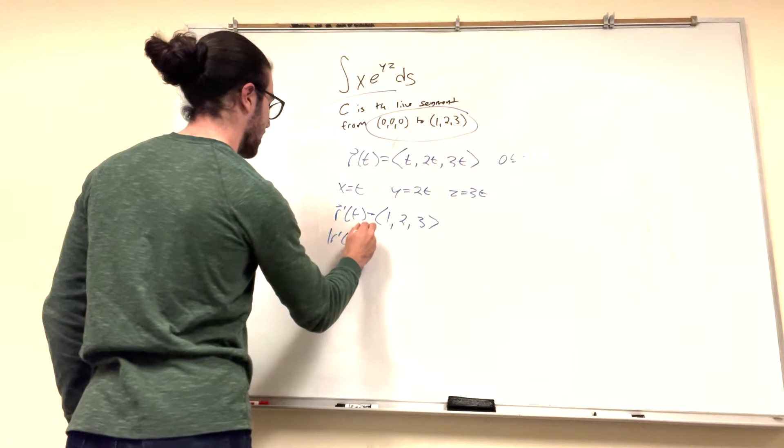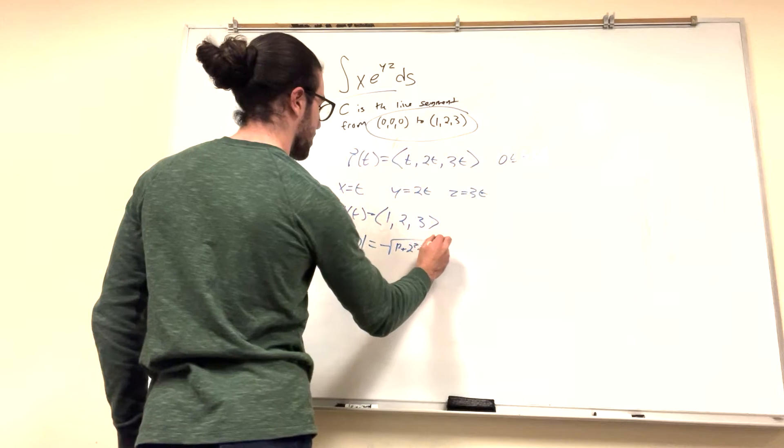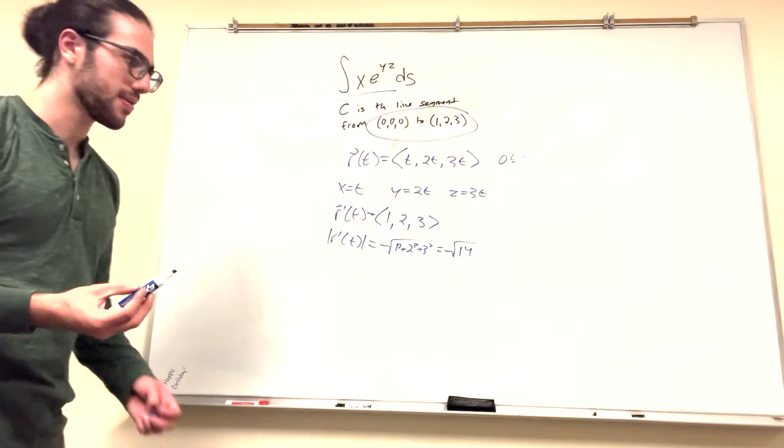Now the magnitude of r prime of t is equal to the square root of 1 squared plus 2 squared plus 3 squared, which is equal to the square root of 14. So now we have all we need, actually. Let's set up the integral.